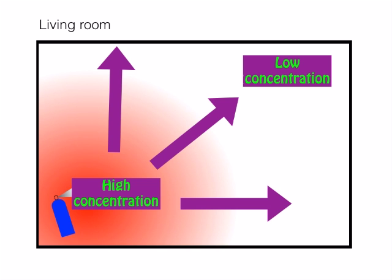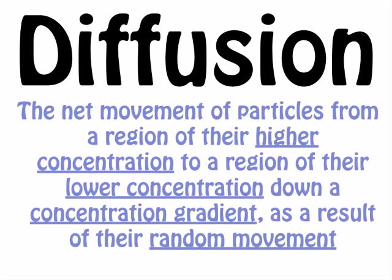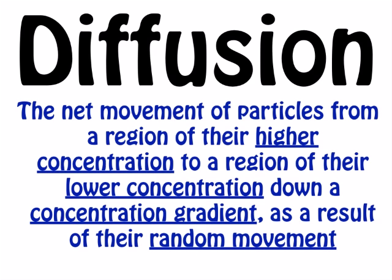We can describe this change, this difference between high concentration and low concentration, as a concentration gradient. All that means is there is a difference — we've got high in one place, low in another. The worded definition you need to know is: diffusion is the net movement of particles from a region of higher concentration to a region of lower concentration, down a concentration gradient, as a result of their random movement. Remember, these particles aren't trying to go to the area of low concentration — they're going everywhere, and that includes the area of low concentration. This is the random movement part.